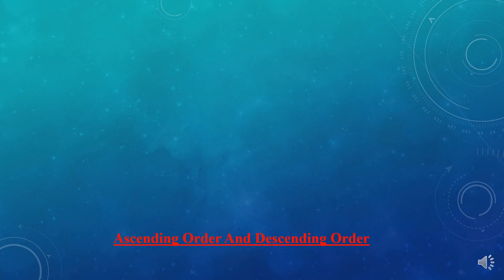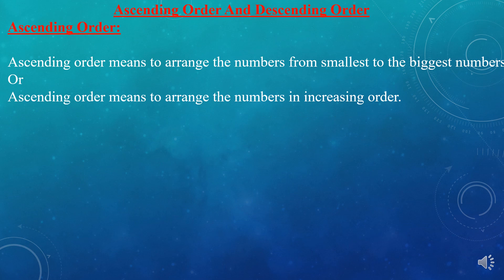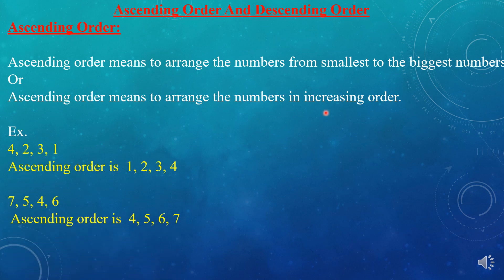Now we will do the concept of ascending order and descending order. First we will do ascending order. Ascending order means to arrange the numbers from smallest to the biggest, or in increasing order. Let's see an example: 4, 2, 3, 1. We have to write these numbers in ascending order, so we write the smallest number first — that is 1 — then 2, then 3, then 4.